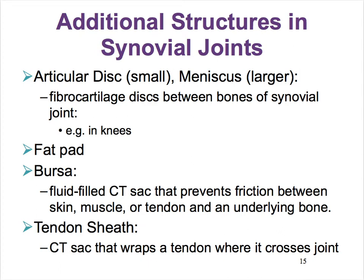In addition to the typical synovial joint anatomy, we might see additional ligaments, especially in the knee joint, but we can also see all kinds of other additional structures. The knee joint is a great example where we see little pads of fibrocartilage—called menisci—that help with shock absorption.